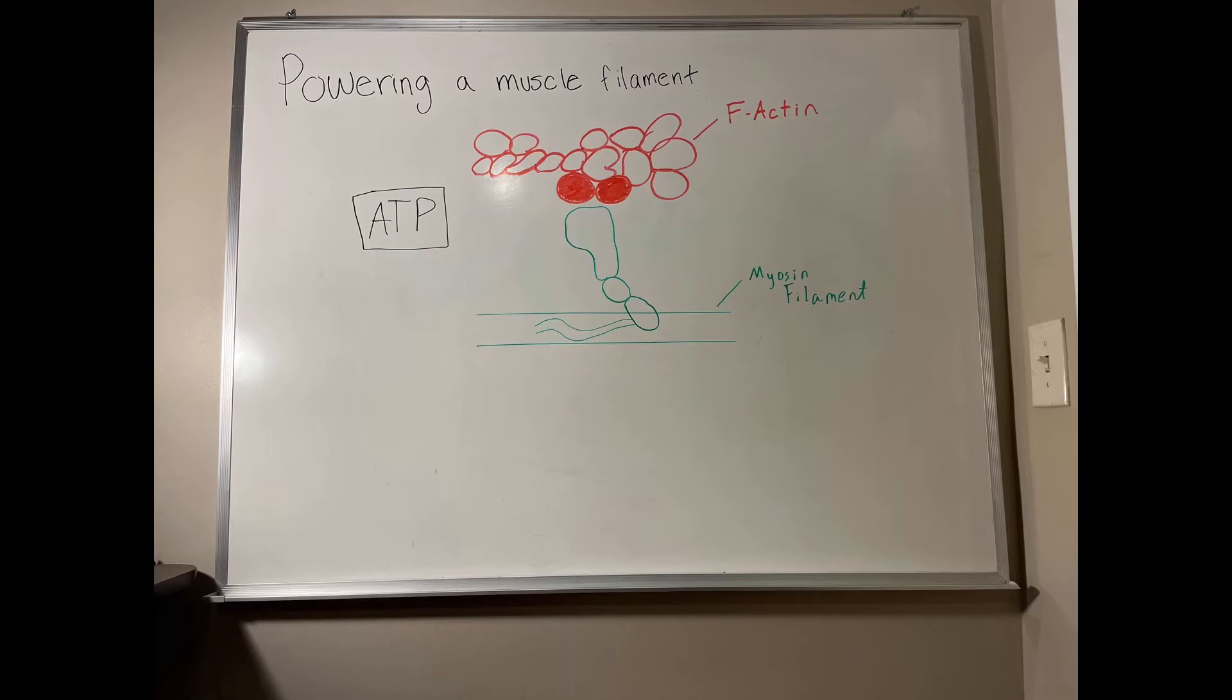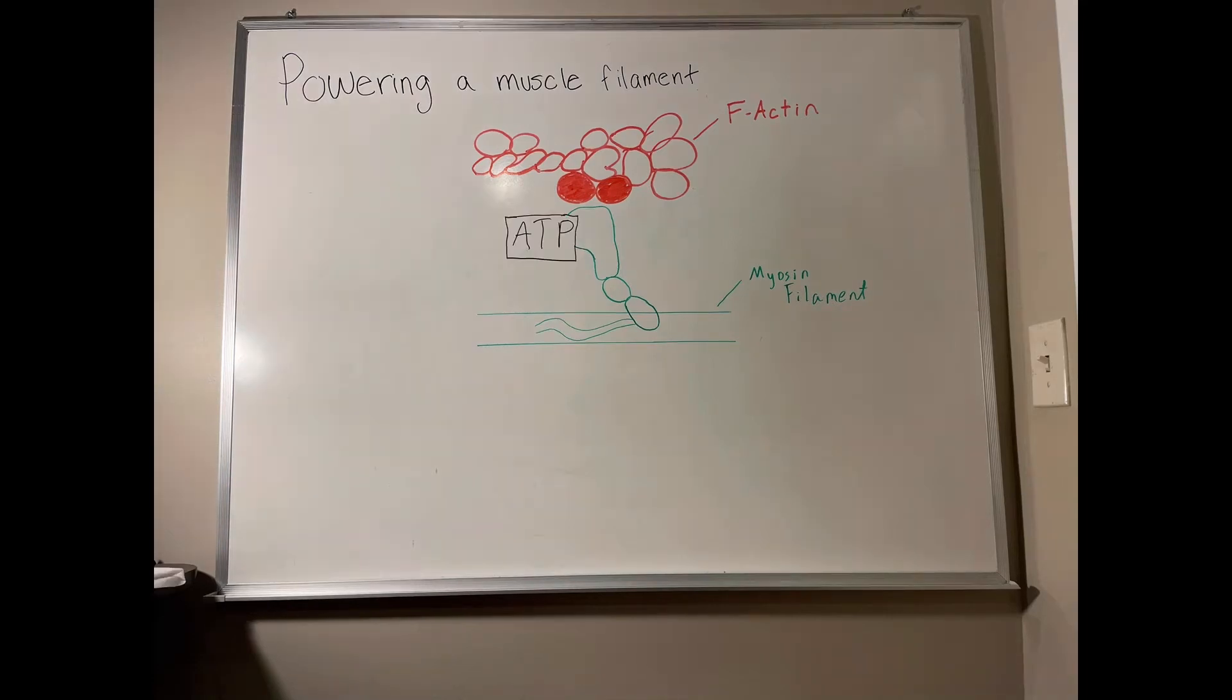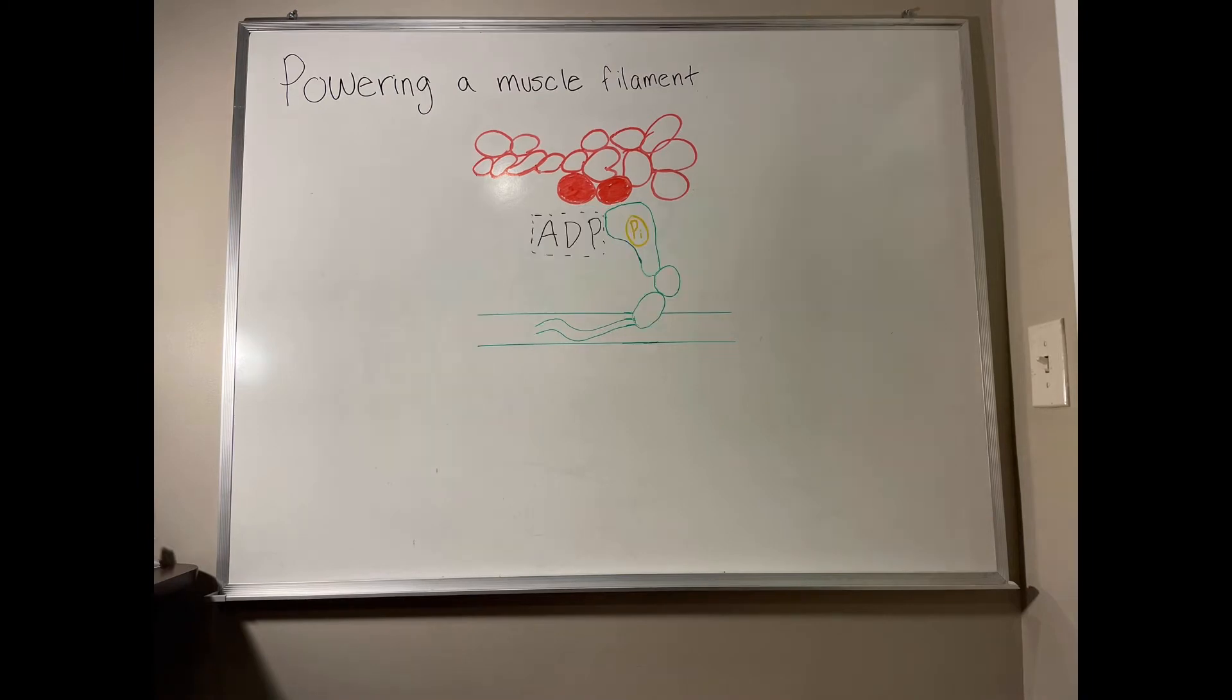Starting in this part of the cycle, ATP is brought in and is attached to the myosin fiber head. At this point, ATP is hydrolyzed, making it ADP along with the phosphate now on the fiber head.